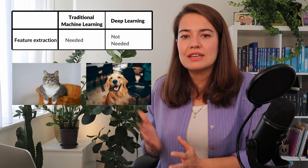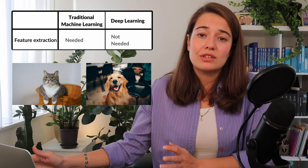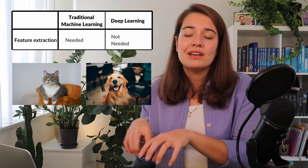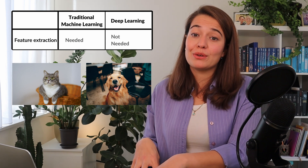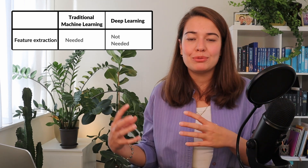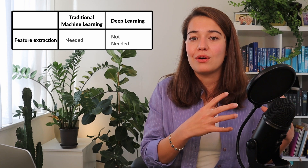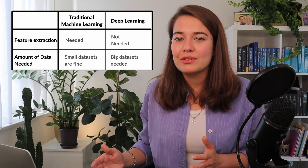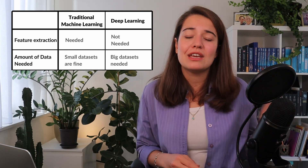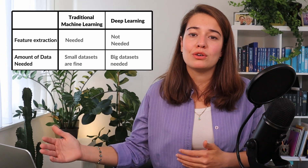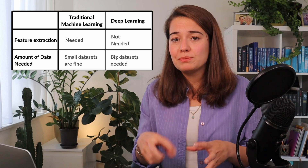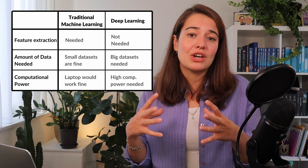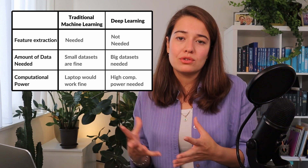Whereas for deep learning, you can just give the image as it is to your deep learning algorithm and it will itself understand what the pattern is and what the features are that are separating the two animals from each other. When you're training deep learning models, you do not have to do feature engineering at all. But this nice feature comes with a cost: when you're training deep learning algorithms, you have to have much more data than you need for traditional machine learning algorithms. Also, due to all the computation involved, you need a stronger machine with higher processing power, and it's going to take a longer time.